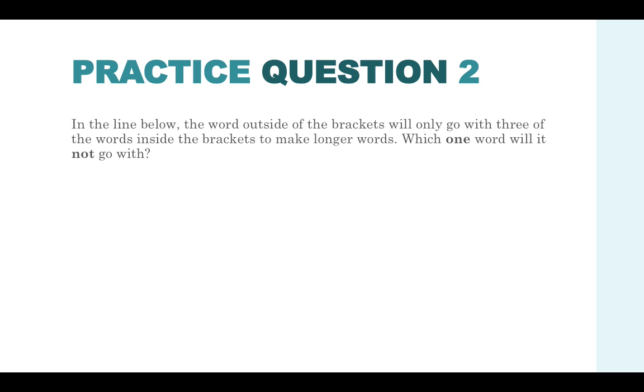Practice question two. In the line below, the word outside of the brackets will only go with three of the words inside the brackets to make longer words. Which one word will it not go with? Here we have the word 'an' and your four choices of words. You're picking out the word that it does not go with.